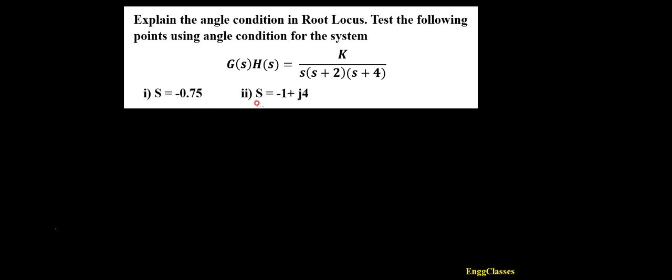In this video lecture we shall consider the concept and explain the angle condition in root locus. We will test the following points using the angle condition for the system given: G(s)H(s) = k divided by s(s+2)(s+4), and this needs to be tested for the points s = -0.5, s = -0.75, and s = -1+j4.